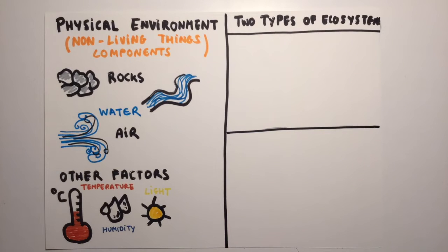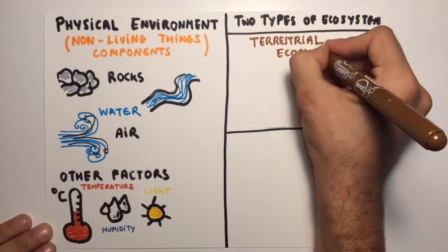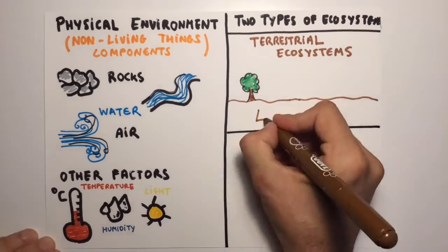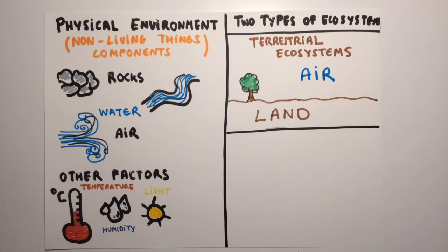Our planet has many different ecosystems, found in two types of physical environments. The first ones are the terrestrial environments. These are found on land and surrounded by air.